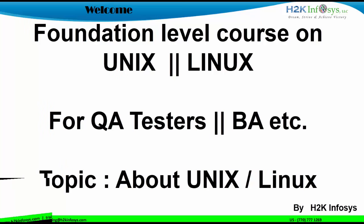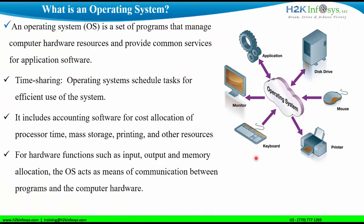You're exactly right. Let me also put it in the right way. Basically, an operating system is a software that supports a computer's functions such as scheduling tasks, executing applications, and controlling different external devices such as printers, CD-ROM, and mouse. As you can see in this figure, using an operating system we can schedule different tasks at different timings.